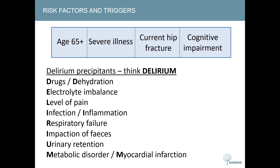D stands for drugs, including withdrawal, toxicity, and anticholinergics, as well as dehydration. E is electrolyte imbalance. L means level of pain. I describes infection and inflammation, including being post-surgery. R is respiratory failure, including hypoxia and hypercapnia. I is impaction of feces, meaning constipation. U is urinary retention. And M is a metabolic disorder, which could be liver or renal failure, hypoglycemia, or myocardial infarction. Also not included in this mnemonic are sleep disturbance and brain injury.